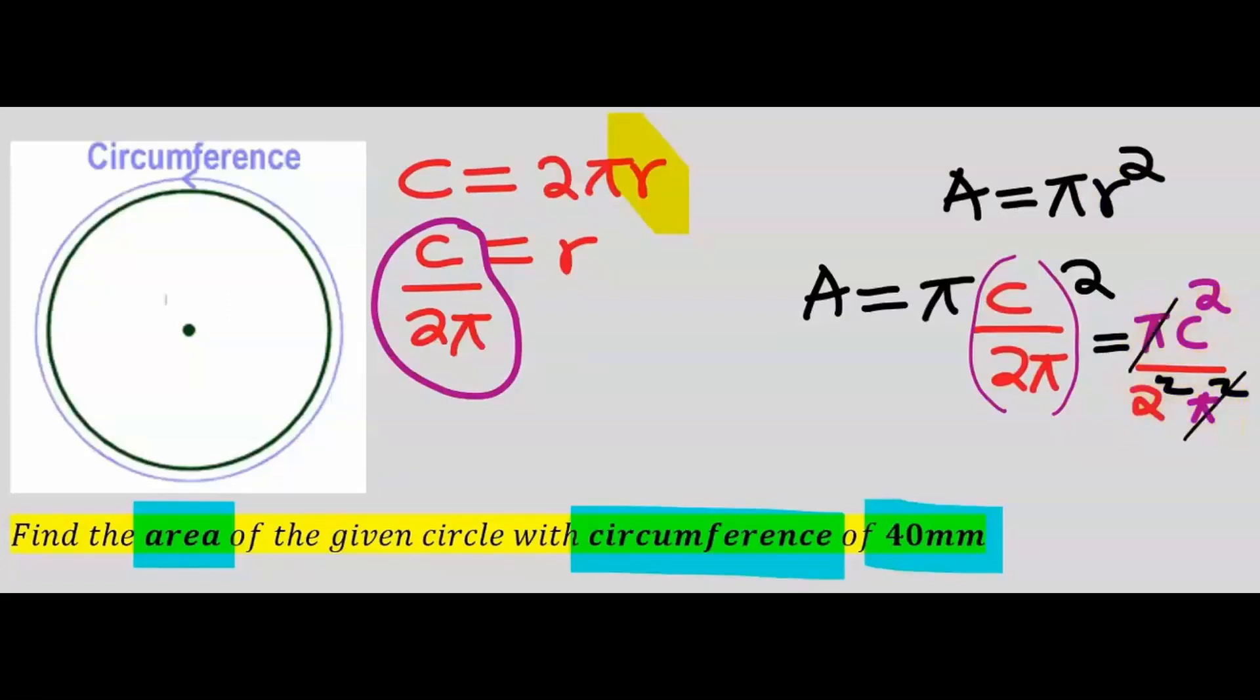one of this π at the denominator, and we're finally left with the area is the circumference squared divided by 4π.